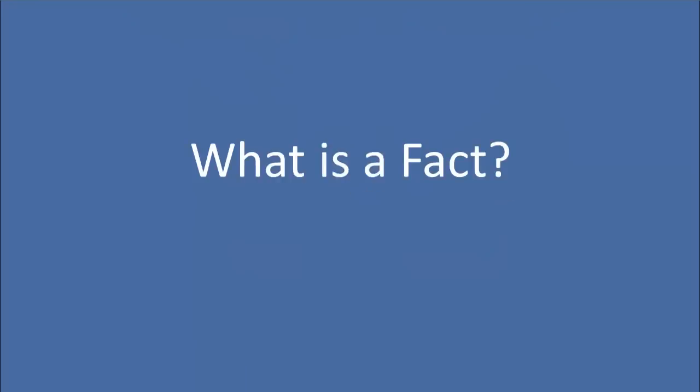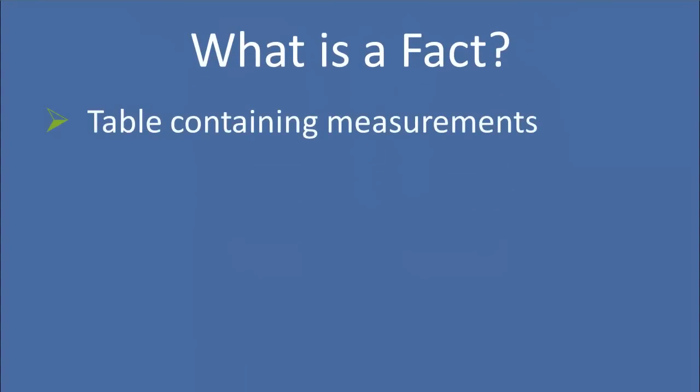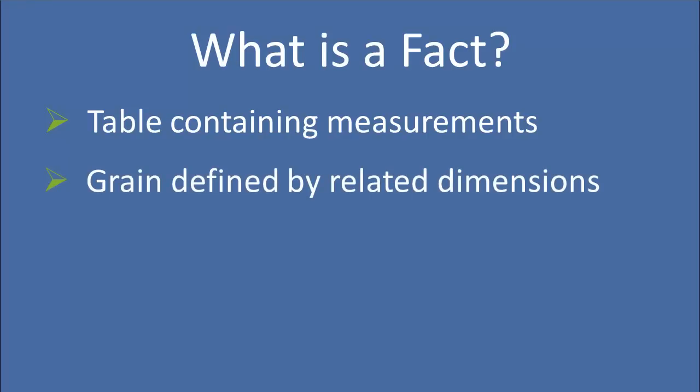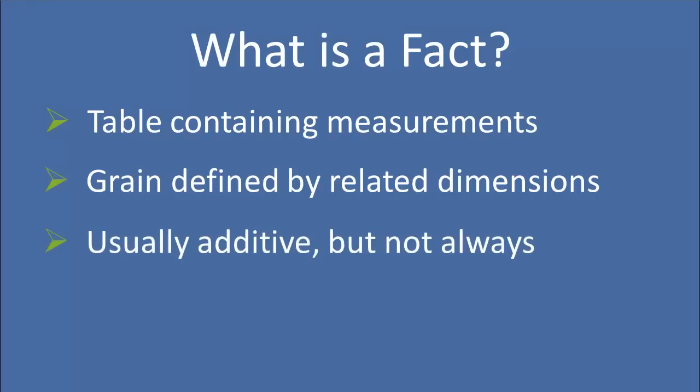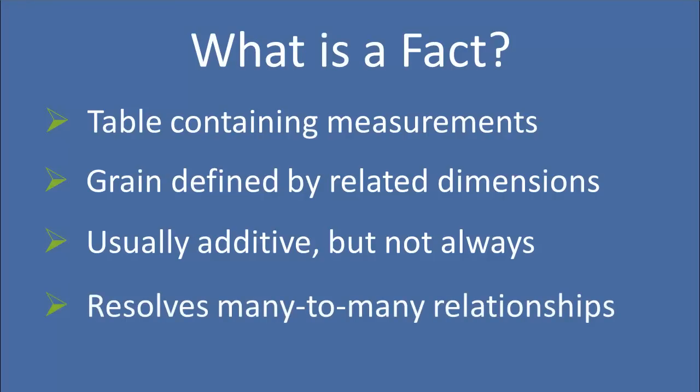Starting out with the fact table. A fact table is a table in the database that contains measurements. Each record is a different measurement and the granularity of that measurement is defined by related dimensions, which we'll talk about in a moment. Usually these measurements are additive — something like sales where I can sum them up across multiple records — but not always. Sometimes they're semi-additive, meaning they're additive across only a subset of dimensions. Fact tables are used to resolve many-to-many relationships.